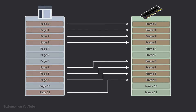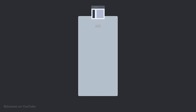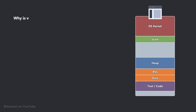The virtual memory of a process is divided into several regions, each serving a specific purpose: code, data and BSS, heap, stack, the operating system's kernel space, and potentially other segments. This division is really important for several reasons.